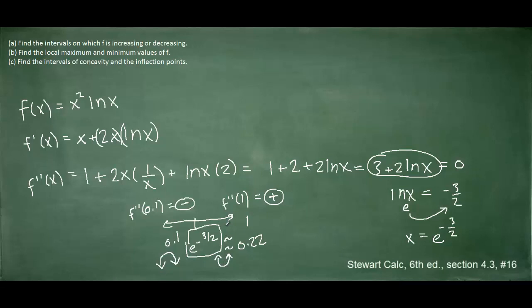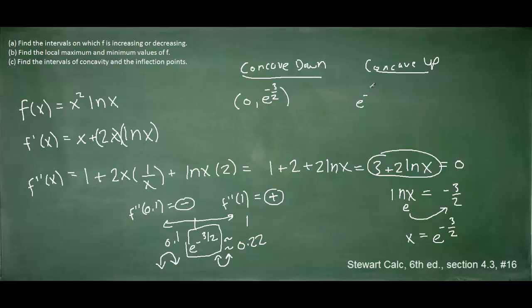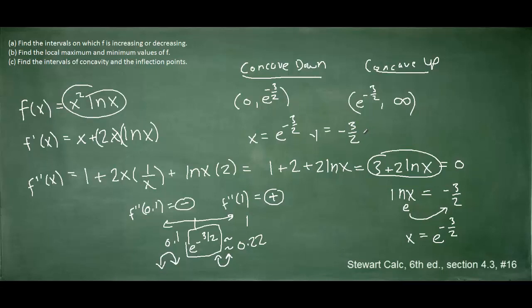The function is concave down from 0 up to e to the negative 3 halves, and concave up from e to the negative 3 halves to infinity. Since the concavity changes at x equals e to the negative 3 halves, that is our inflection point. Inflection points occur any time the concavity changes. To find the y-coordinate, we plug e to the negative 3 halves into the original function, which returns a value of negative 3 halves times e to the negative 3. That gives us the coordinates of the inflection point.